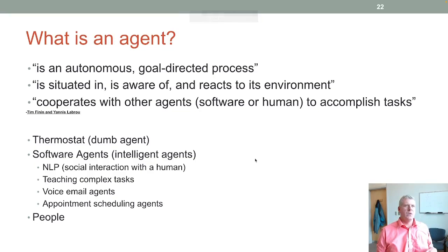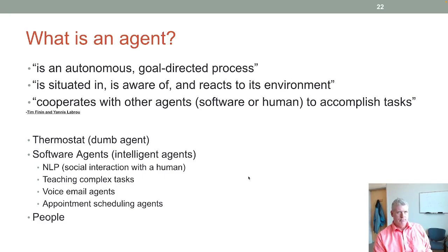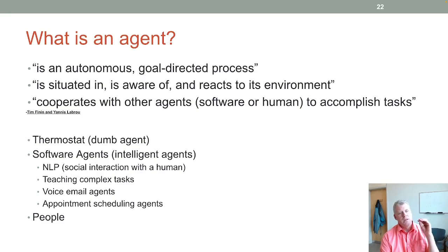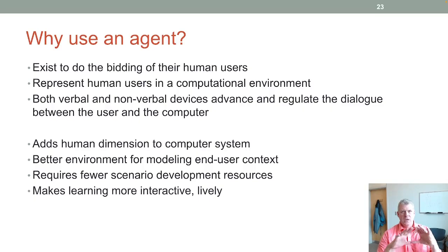So what is an agent? It's an autonomous, goal-oriented process that is aware of and reacts to its environment, and cooperates with other agents — whether human or software — to accomplish tasks or reach a goal. There are software intelligent agents, and there are people who are agents. We can simulate that idea in software by creating an intelligent software agent. An agent exists to do the bidding of human users, represents users in computational environments, and can use both verbal and nonverbal devices to advance and regulate dialogue.